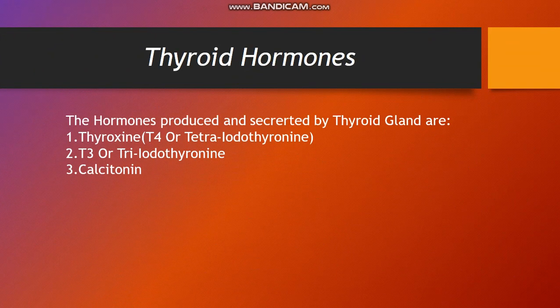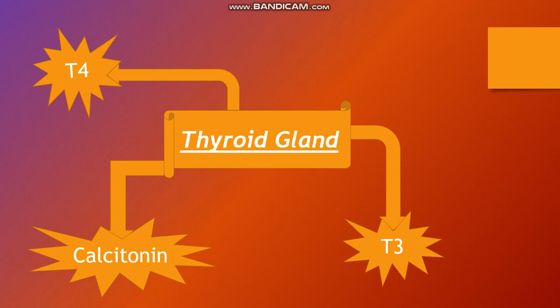Thyroid hormones are the hormones produced and secreted by the thyroid gland. You must keep in mind the thyroid gland is an endocrine gland. It produces four hormones: thyroxine (T4), also known as tetraiodothyronine; T3, also known as triiodothyronine; and calcitonin.